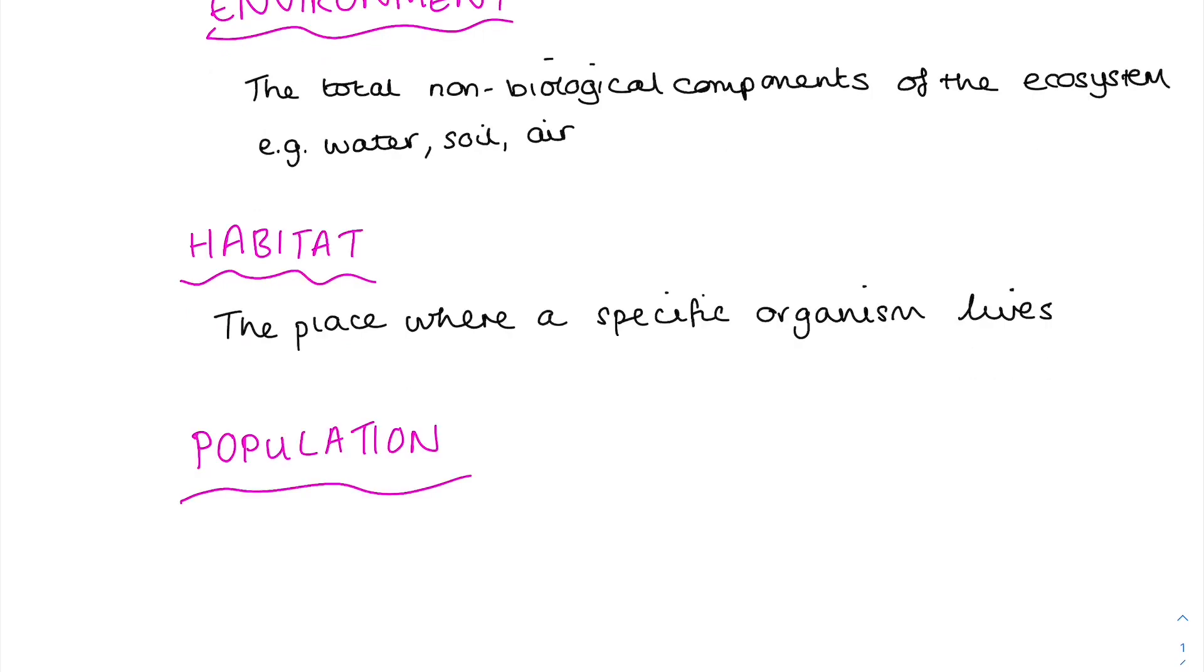Population. The crucial word here is all. It is all the organisms of a particular species found in an ecosystem. So, I'm going to highlight the key words here, which is all and species.